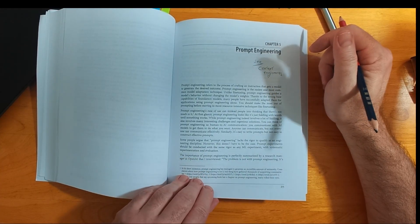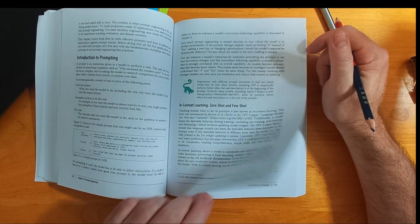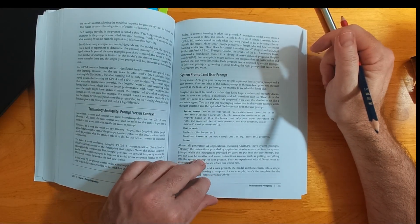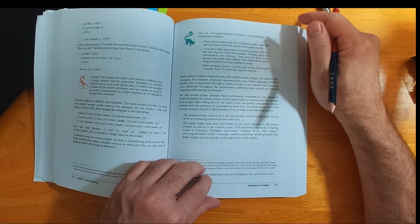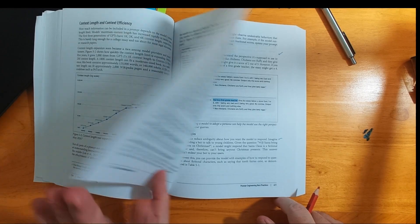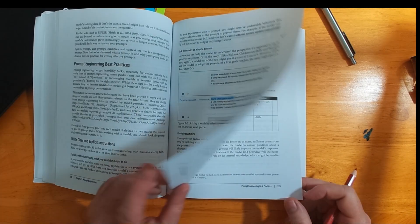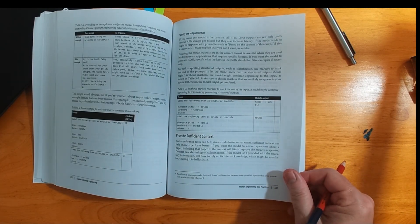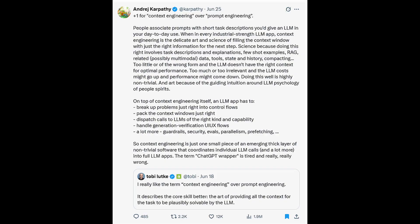Chapter five is prompt engineering. You may think you know about writing prompts, but you can never know enough about writing prompts. Also, there's this new term as of June 2025, context engineering. Context engineering might replace how we talk about prompt engineering. I'm not going to read that entire tweet, but let's highlight: Filling the context window with just the right information for the next step.